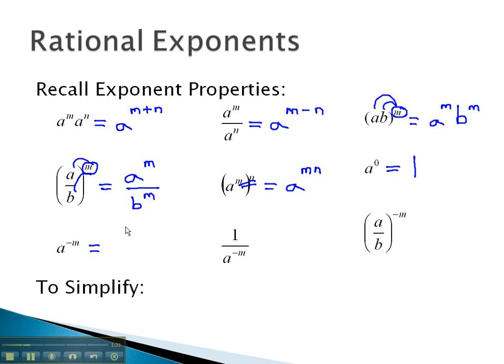Negative exponents mean the base has to move, either to the denominator in this first example, or back up to the numerator in this second example.